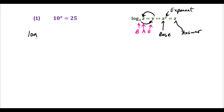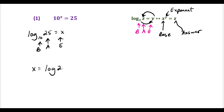So here we're going to write this as a log. Our base is 10, our answer is 25, and that equals our exponent x — spelling out B-A-E when converting to log form. So we can just say x is equal to log of 25. Just know with logs, the only base you don't have to write is base 10, so this is sufficient for our answer.